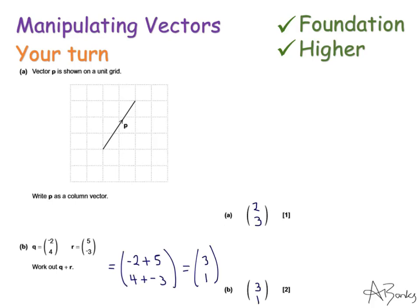Here's the full solutions. So P as a column vector, if you think about when we translate a shape from one location to another, this would be 2 right and 3 up. So we write that as a column vector as (2, 3). And then here to work out Q plus R, we just add together the top numbers and add together the bottom numbers. So you should have got (3, 1). Thank you for watching.